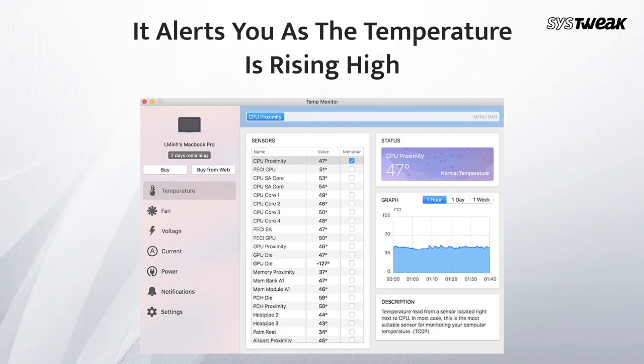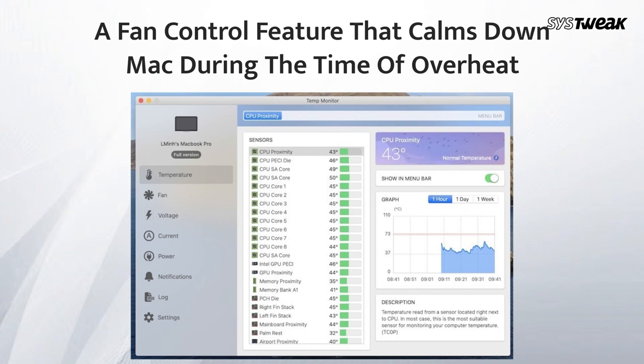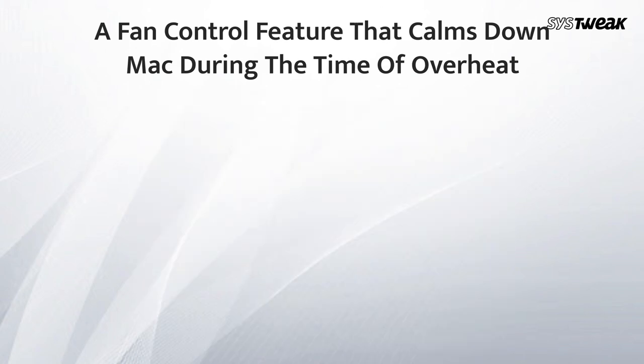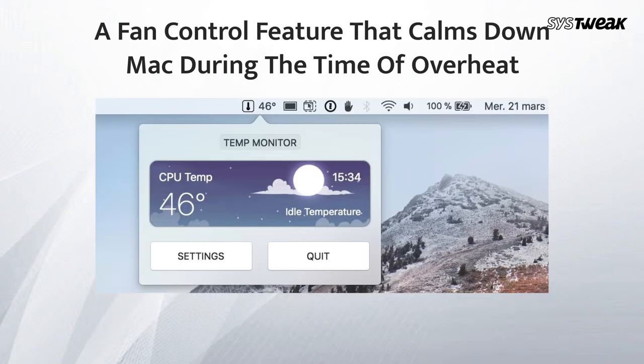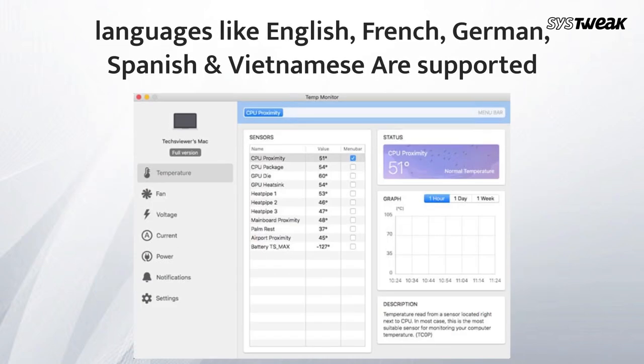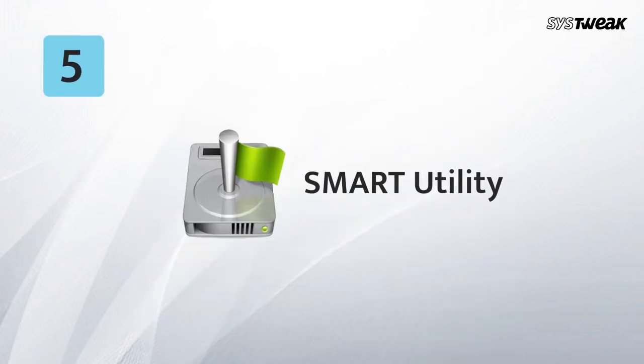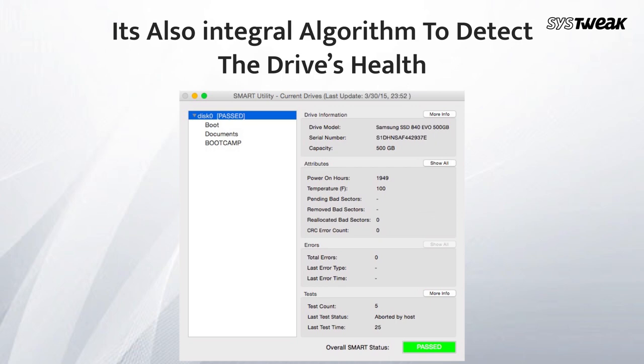Number four: Tamp Monitor. This app alerts you when your CPU temperature gets too high and your system is prone to danger. It also has a fan control feature that calms down your Mac during overheating. For your ease, languages including English, French, German, Spanish, and Vietnamese are supported.